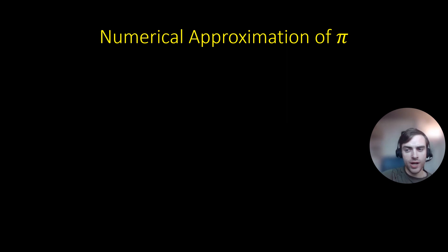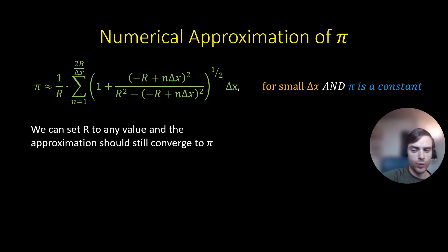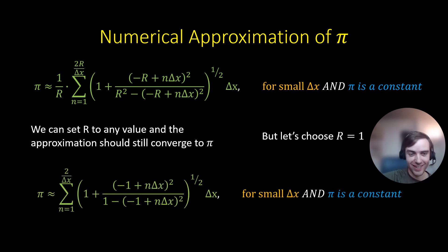So we know that pi is a constant. It converges to the same value regardless of our choice for r. So we will arbitrarily set r equal to 1. And so we then obtain the following approximation for pi, as shown over here.